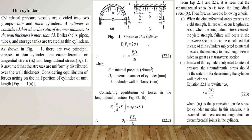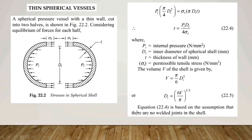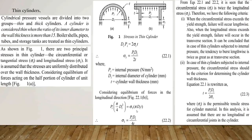Considering figure B and the equilibrium of forces in the longitudinal direction: pi times (pi/4) times di² equals sigma-L times pi times di times t. Therefore, sigma-L equals pi times di divided by 4t. This is equation 22.2.